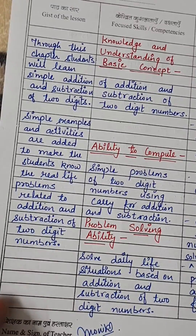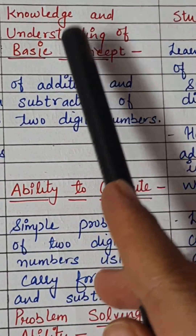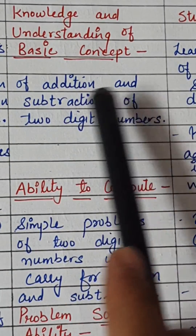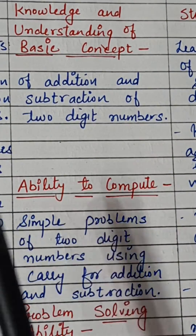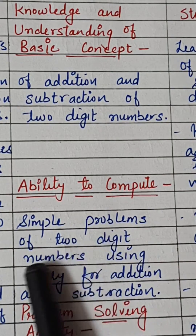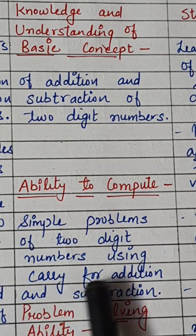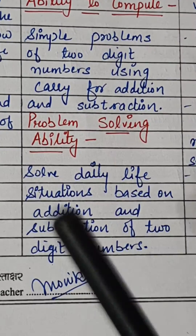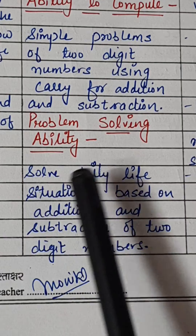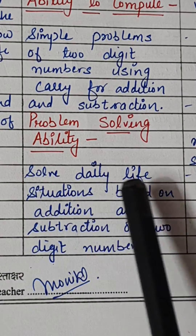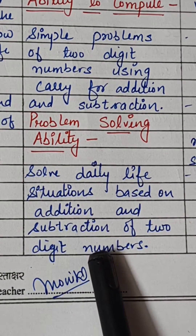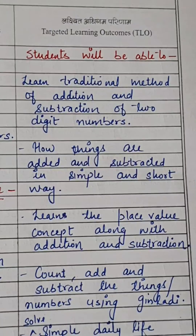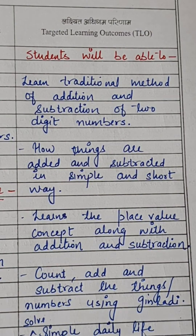Now let's talk about the competencies. The first one is knowledge and understanding of the basic concepts of addition and subtraction of two-digit numbers. The second is the ability to compute simple problems of two-digit numbers using carry for addition and subtraction. In problem solving, children will solve daily life situations based on addition and subtraction of two-digit numbers.